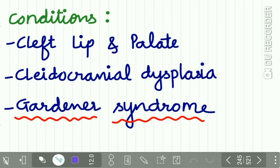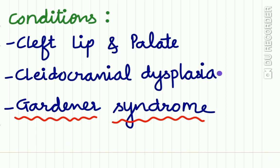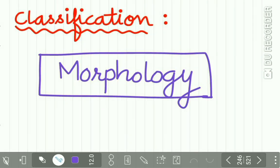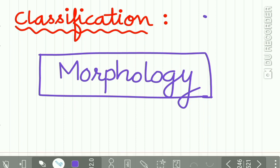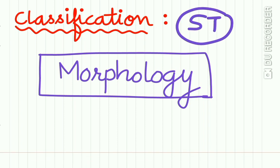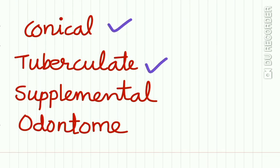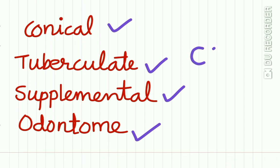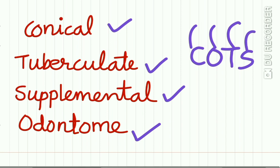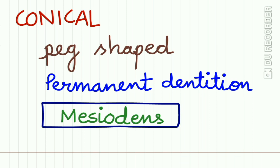Conditions associated with supernumerary teeth include cleft lip and palate, cleidocranial dysplasia, and Gardner syndrome. The classification of supernumerary teeth is based on the morphology of the teeth. A short form to remember these types is COTS: Conical, Odontome, Tuberculate, and Supplemental.